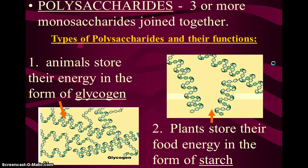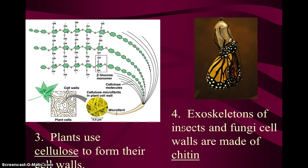Polysaccharides — poly means many, so three or more. You take three or more monosaccharides, join them together, and you get a polysaccharide. A good example of a polysaccharide found in animals is glycogen. A good example found in plants is starch. Cellulose is also found in plants — it's used for the support and structure of cell walls, giving plants the ability to grow up toward the sun. Chitin is a type of polysaccharide found in the exoskeleton of insects and fungi.